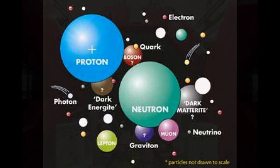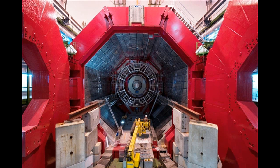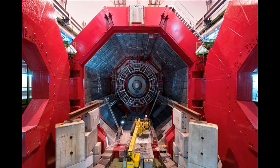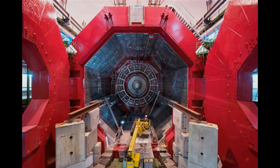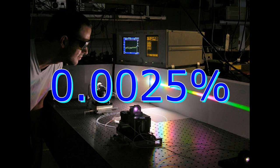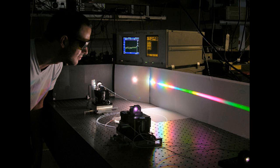According to scientists familiar with the paper, the neutrinos raced from a particle accelerator at CERN outside Geneva, where they were created, to a cavern underneath Gran Sasso in Italy, a distance of approximately 450 miles, about 60 nanoseconds faster than it would take a light beam. That amounts to a speed greater than light by about 0.0025%, 2.5 parts in a hundred thousand.